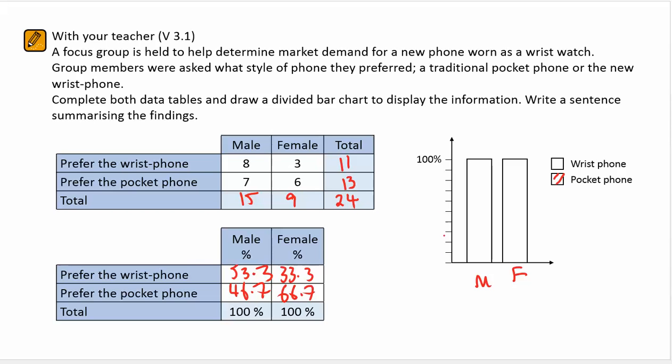So when I have a look at the females, marking the scale at 10, 20, 30, 40, 50, 60, 70, and the males are very close to 50 percent.